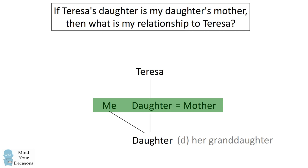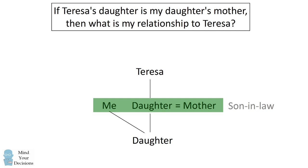Intuitively, most people come to the conclusion that it might be that you are Teresa's son-in-law, and that could be a possible answer because it would be at the same level. But it's not one of the options, so we want to remove son-in-law since that's not one of our options.